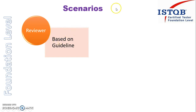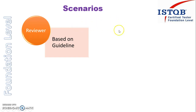In the ad hoc based review technique, we didn't have any guidelines at all. Whereas in the checklist based review technique, we had a checklist and depending upon that the reviewer was checking the work product. And now here the reviewer will have a guideline, and based on that particular guideline the reviewer will perform his review.